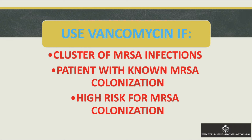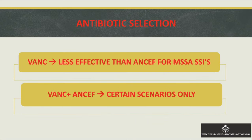High-risk MRSA populations include patients who've been in the ICU for a long time, current hospitalization, nursing home residents, hemodialysis patients, and immunosuppressed patients. Vancomycin has been shown to be less effective than ANCEF for MSSA. In some cases, both vanco and ANCEF are used together, but ANCEF is what surgeons typically pick.